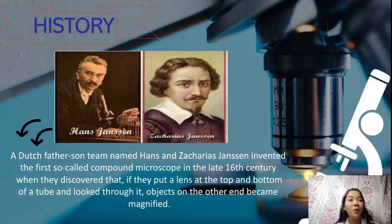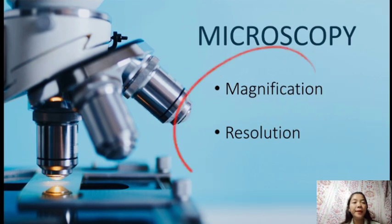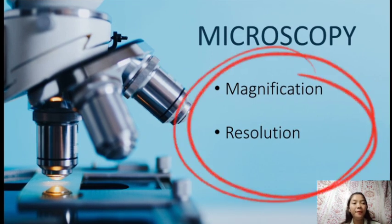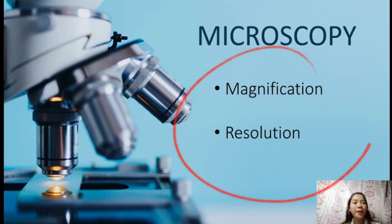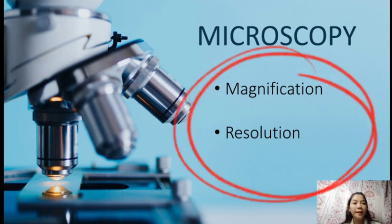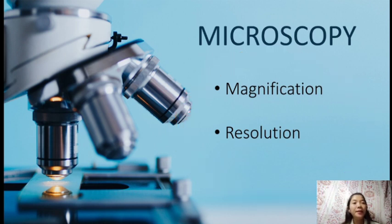Just imagine how amazing these two scientists were to discover the compound microscope in the 16th century, for us to be able to see the smallest organisms that can now be seen. So for us to be able to see them, microscope ay yung tinatawag natin microscopy, which also has two types: the magnification and the resolution.